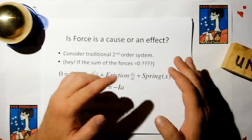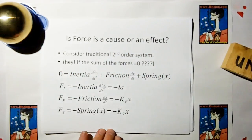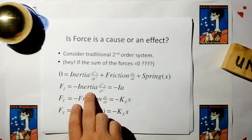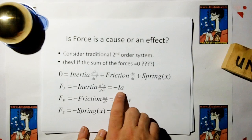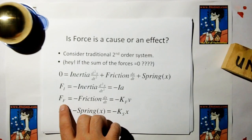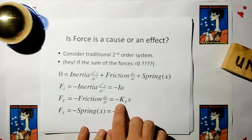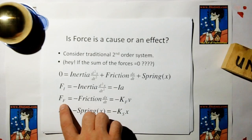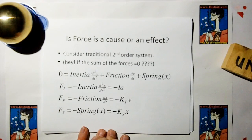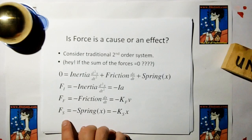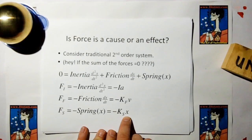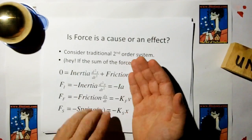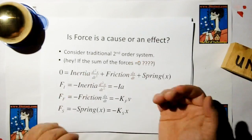If we take out the individual components and look at them separately, we find that the force of inertia is opposite to the acceleration of the object. The force of friction is opposite to the velocity. The frictional force direction is opposite to the velocity of the object. And the force exerted on a spring is opposite to the displacement of the object from its steady state. So we only get these forces when things are disturbed, which is a kind of interesting realization.